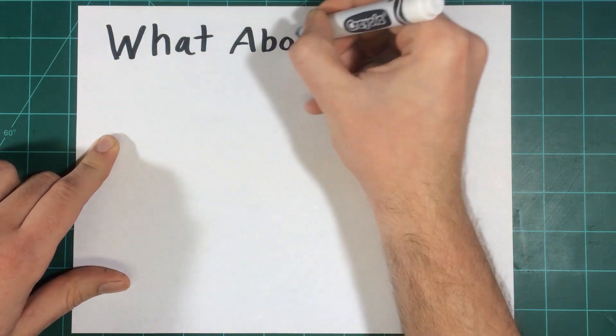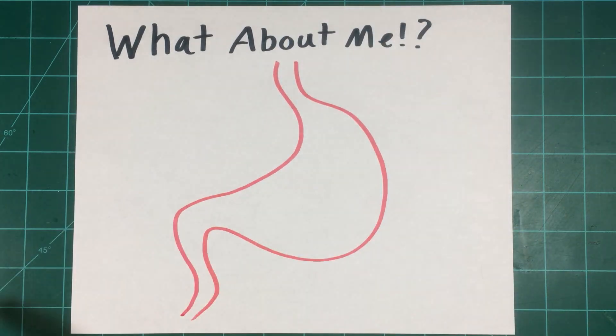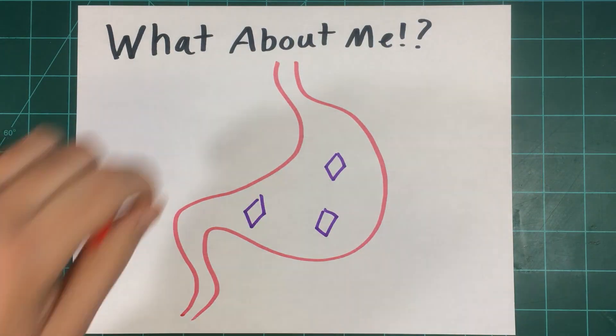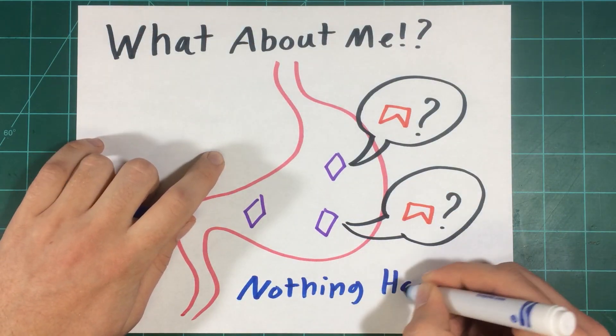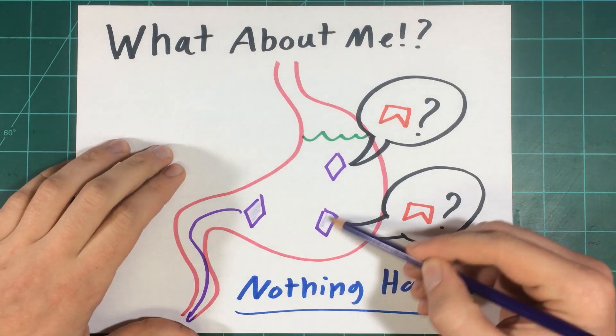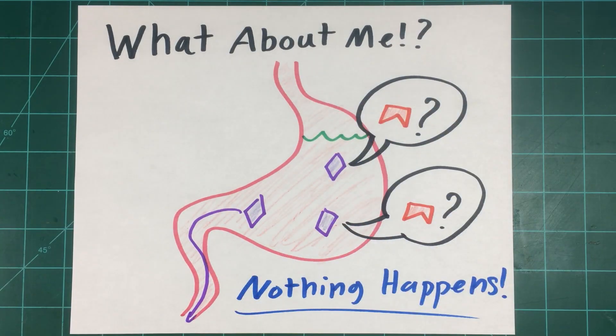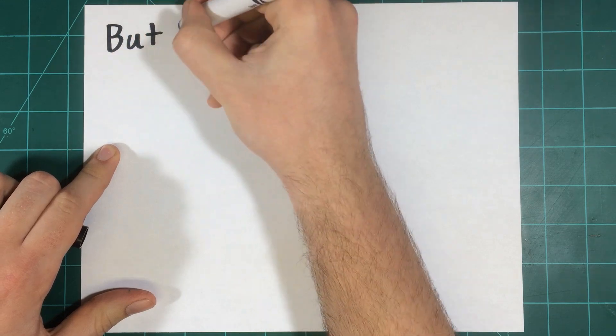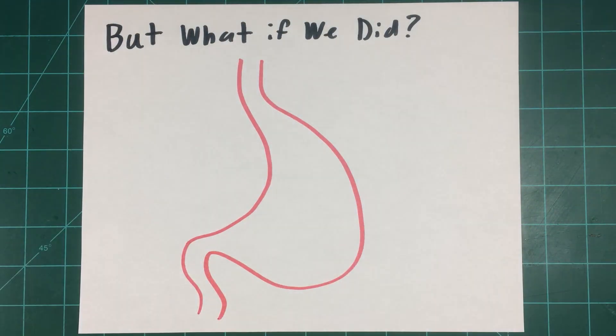This is a pretty grim fate for these insects, so what prevents you from meeting the same end if you are to eat BT corn? The answer is that you, and most other organisms, do not have these receptors in our digestive tract. The BT proteins simply have nothing to do when eaten by a non-pest organism. But what if we did have these receptors? Would that make BT corn harmful to us then? Still, the answer is no.